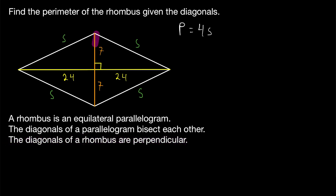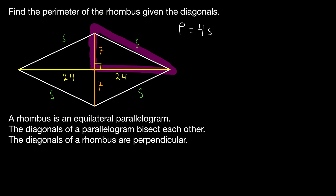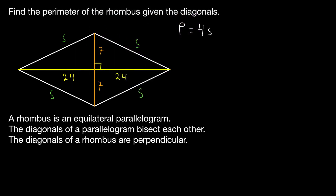That's important because it means this is a right triangle — and in fact, all four of these are right triangles. We can apply the Pythagorean theorem to any of these four congruent right triangles in order to solve for the hypotenuse, which is the side length s. Applying the Pythagorean theorem to this right triangle, the sum of the squares of the leg lengths equals the square of the hypotenuse — in this case, S squared.